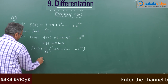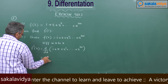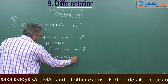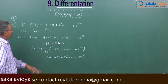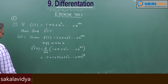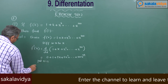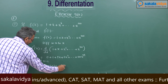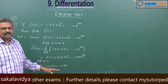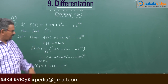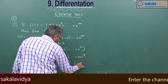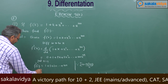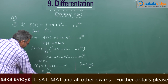So f'(x) = 0 + 1 + 2x + 3x² + ... + 100x⁹⁹. Now we need to find f'(1), so put x = 1. f'(1) = 1 + 2 + 3 + ... + 100. This is the sum Σn, where n goes from 1 to 100.